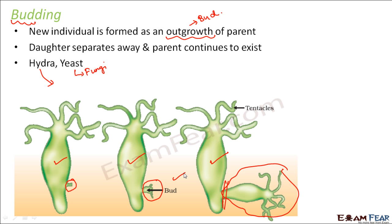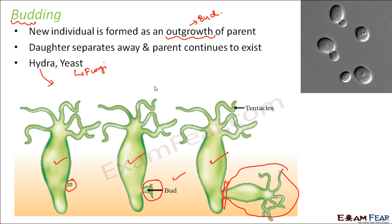Budding also occurs in some other organisms like sponges. This is also very commonly seen in yeast. Here you can see the bud formed in yeast, which will grow and then separate out from the parent.